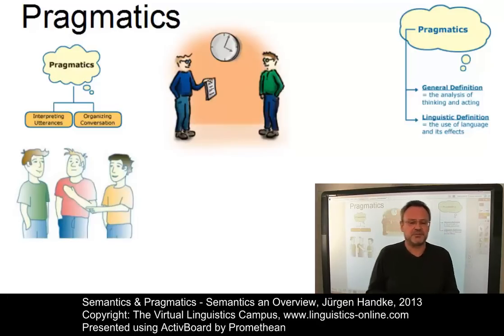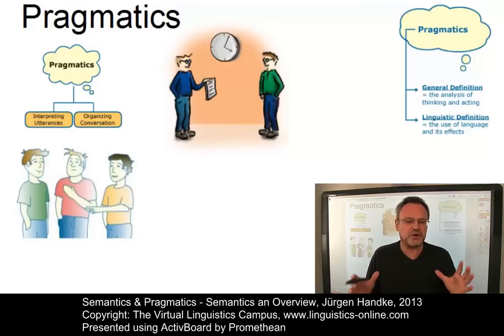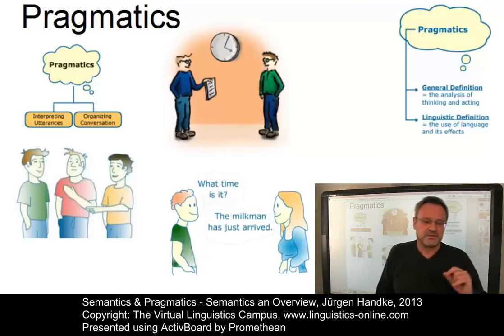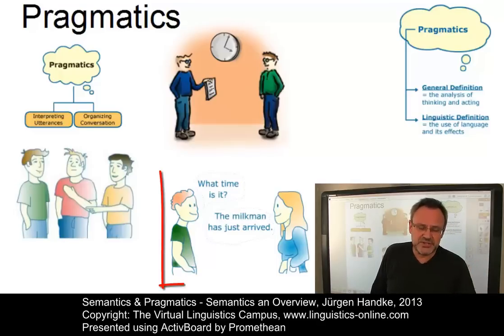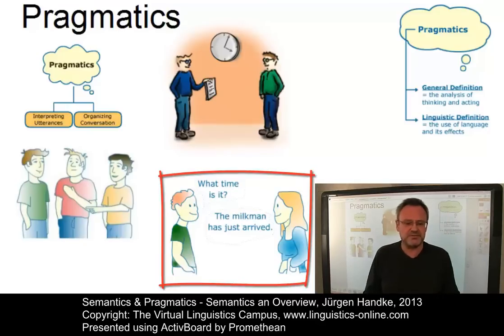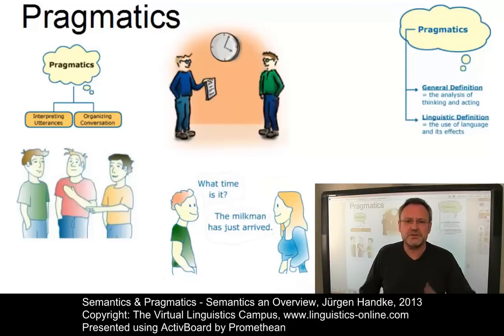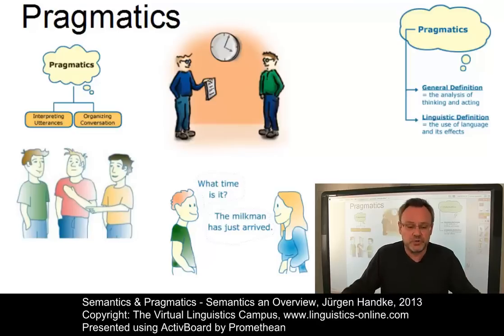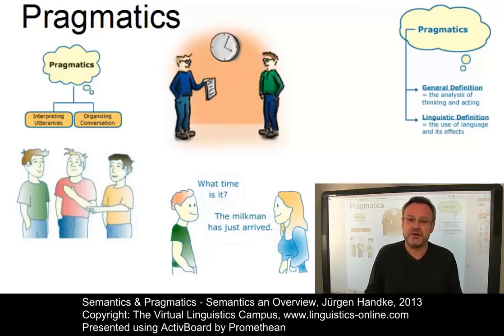In trying to determine what someone actually wants to say, people regularly go beyond the conventional meanings of the words spoken by taking into account contextual aspects. To understand the girl's answer in a dialogue — 'What time is it?' / 'The milkman has just arrived' — you have to interpret the situation, the participants, the history of the interaction, and your world knowledge. You also have to have the ability to draw inferences and conclusions — for example, that it is eight o'clock because the milkman generally arrives at around eight.